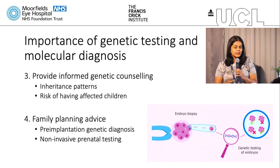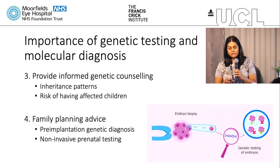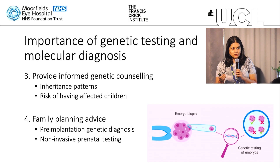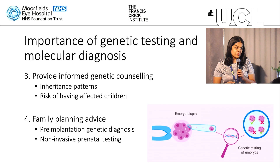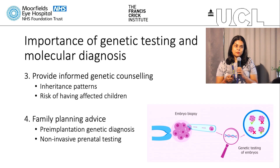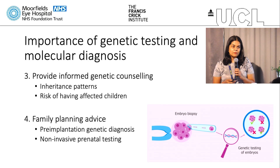We can provide family planning advice. We can now offer pre-implantation genetic diagnosis to families — a form of IVF where you take an individual's eggs and sperm, fertilize in a dish, take a cell from the early developing blastocyst, check if it's carrying the PAX6 mutation, and then only implant healthy embryos back into the womb, thereby avoiding passing it on to the future generation. There is also now non-invasive prenatal testing, where around eight weeks of pregnancy you take a blood test, isolate fetal DNA, and check if it's carrying a mutation.